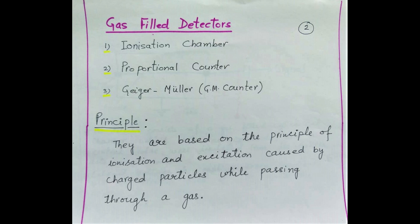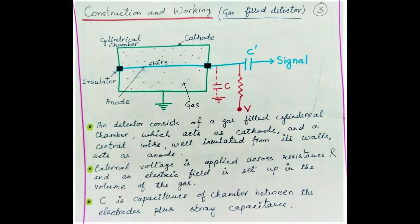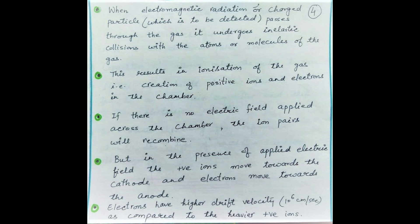These gas-filled detectors work on the principle of ionization and excitation caused by any charged particle or any energetic radiation while passing through a gas. Any gas-filled detector basically consists of a gas-filled cylindrical chamber which acts as cathode, and a central wire which is insulated from the walls of this chamber and acts as anode. An external voltage is applied across the resistance R, and an electric field is set up in the volume of the gas. C is the capacitance of the chamber between the electrodes plus the stray capacitances.